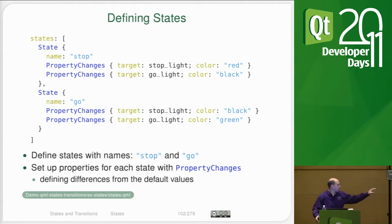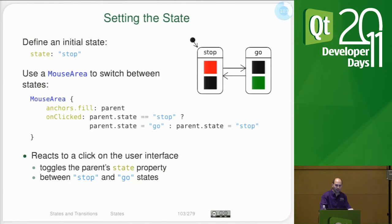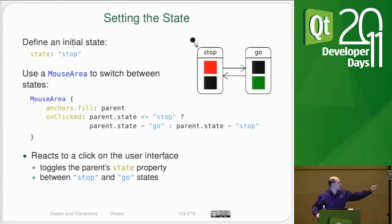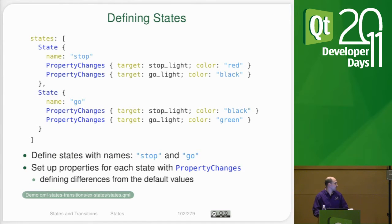In the outer rectangle, we implement a state machine with a stop state and a go state. When we are in the stop state, we make sure the stop light is red and the go light is black. In the go state, the property changes make the stop light black and the go light green. The way to set the state is to simply manipulate the state variable, and initially we start in the stop state.